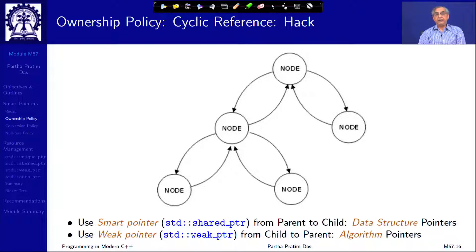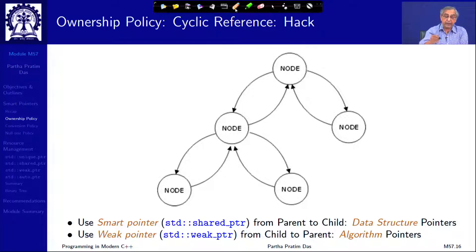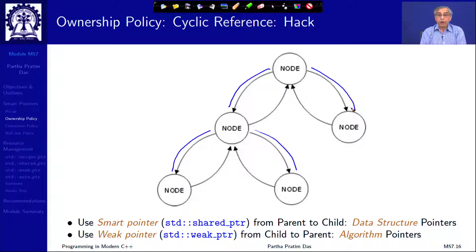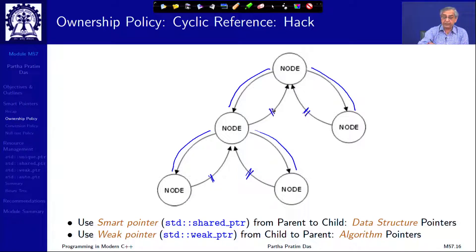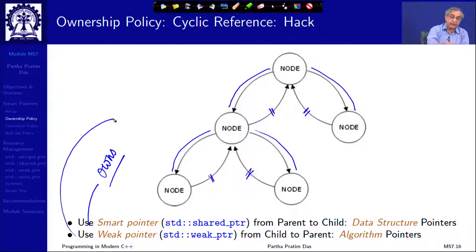For example, you will not be able to delete any of the nodes in a cycle because there is always more than one pointer pointing to each. To take care of that, we introduce two different types of pointers. One is called a shared pointer — which is basically a pointer of the data structure that holds the structure together. The other type just makes references back to some node but does not really own the node.